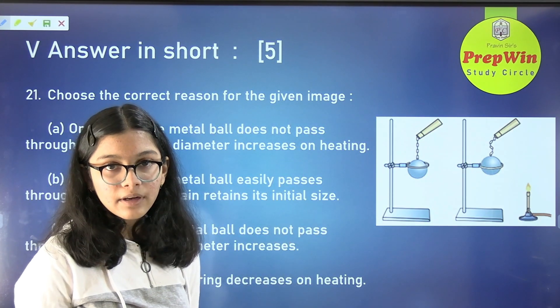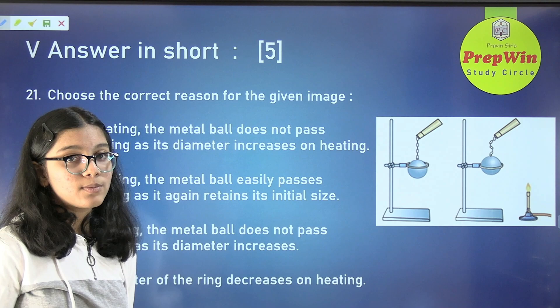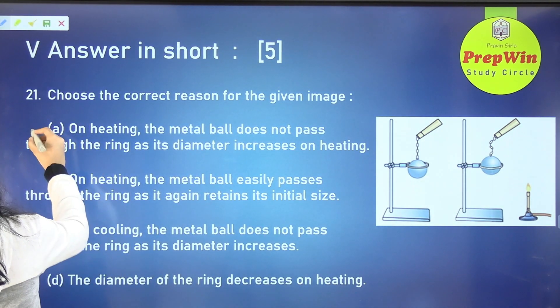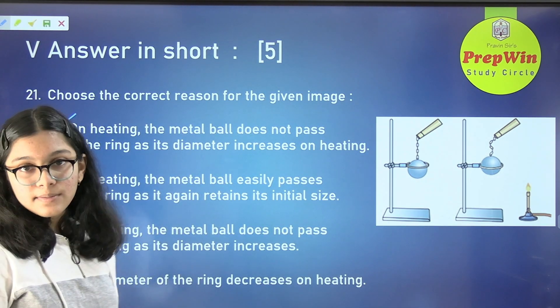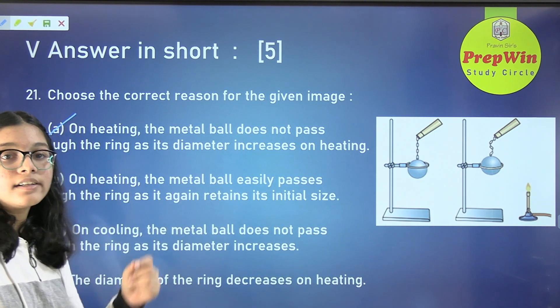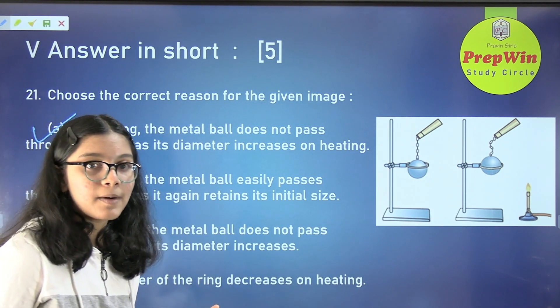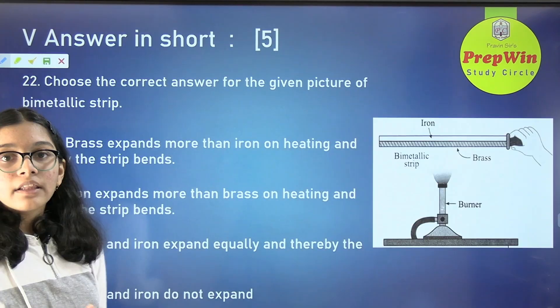Now we have a diagram and we have to choose the correct option. The correct option is option A — solids expand on heating. If we heat a metal ball, it will expand and it won't pass through the ring.